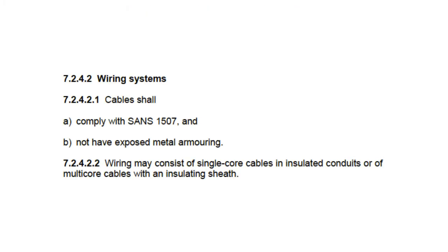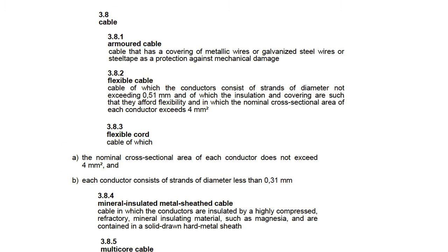Back to section 7.242, which speaks about the wiring systems that can be used. It states that cables shall comply with SANS 1507 and must not have any exposed metal cable armouring. Clause 7.242 tells us that wiring may consist of single core cables in insulated conduits or of multi-core cables with an insulating sheath. If we want to know more about what this means regarding cables, we can look at section 3, which contains definitions — clause 3.8 provides exact definitions of the different kinds of cables.